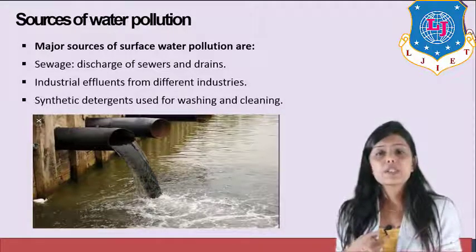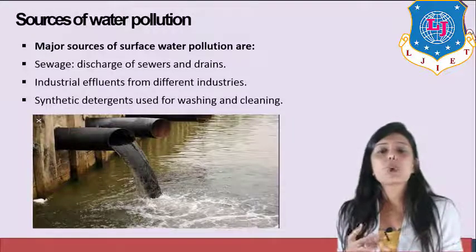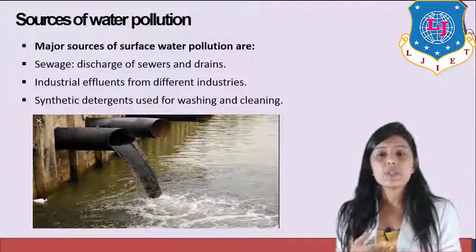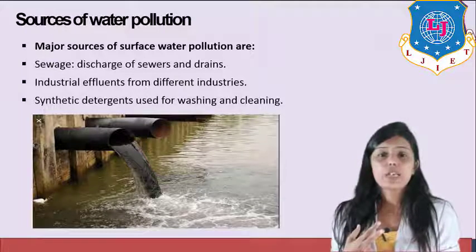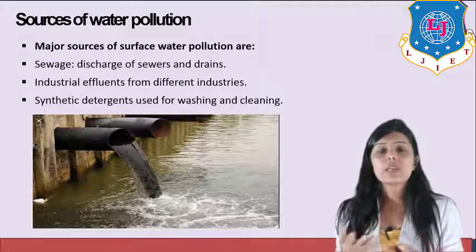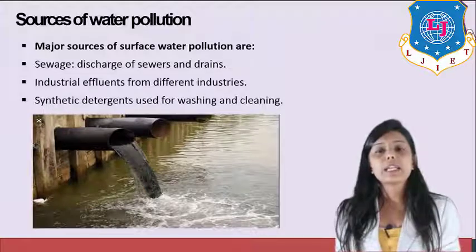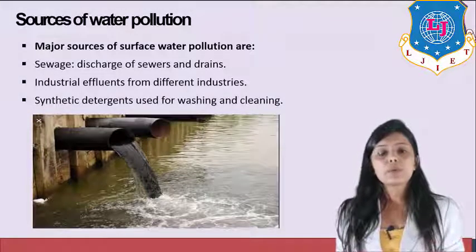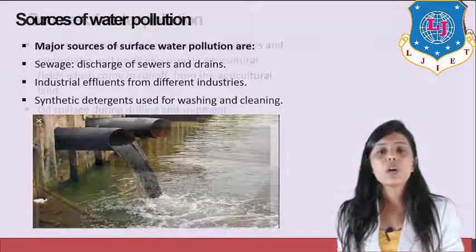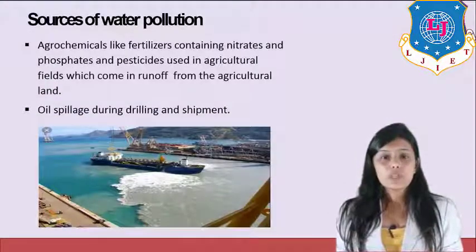The sources of surface water pollution include: first, sewage discharge which goes into gutters; second, industrial effluents which are released into nearby water bodies like lakes and rivers; and third, synthetic detergents used for washing and cleaning. When people wash clothes by the side of a lake, the detergent gets mixed into the water, making it a source of surface water pollution.